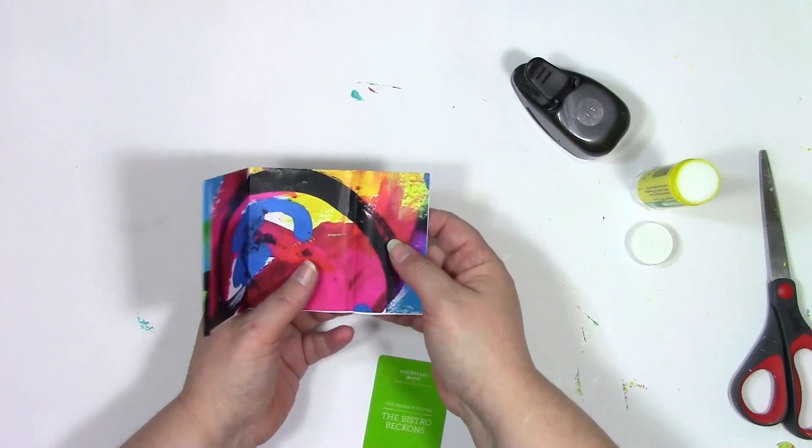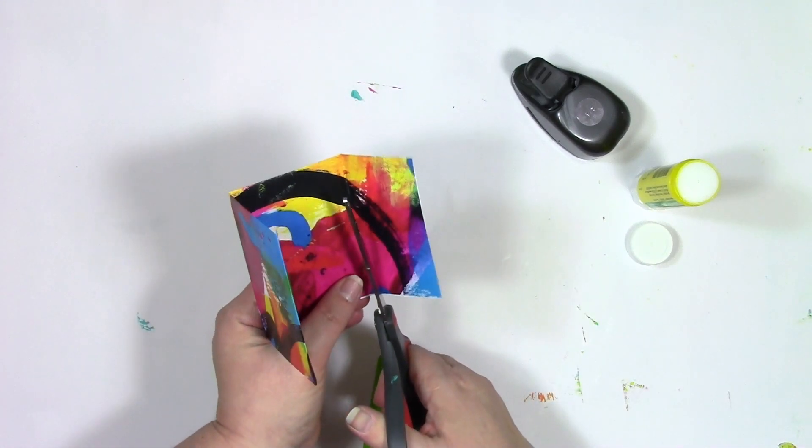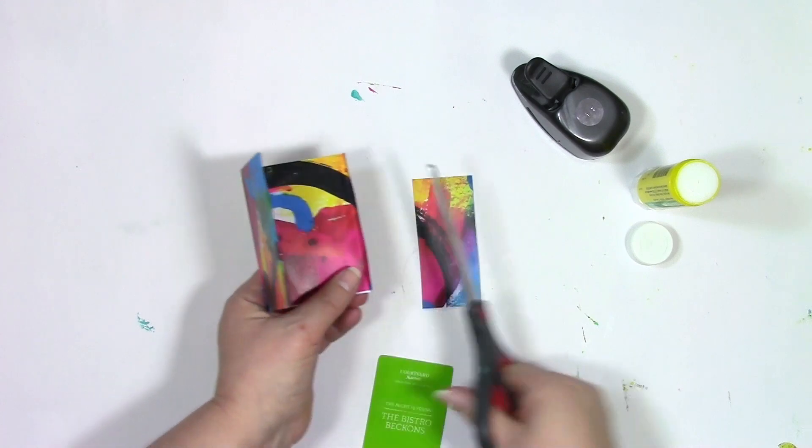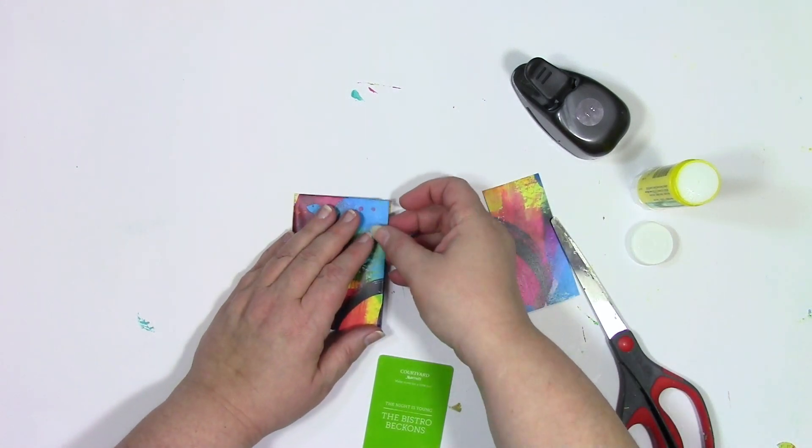That's one huge flap over there. I do not need a big flap like that. I just need a little one like the other side, so I cut off the excess.